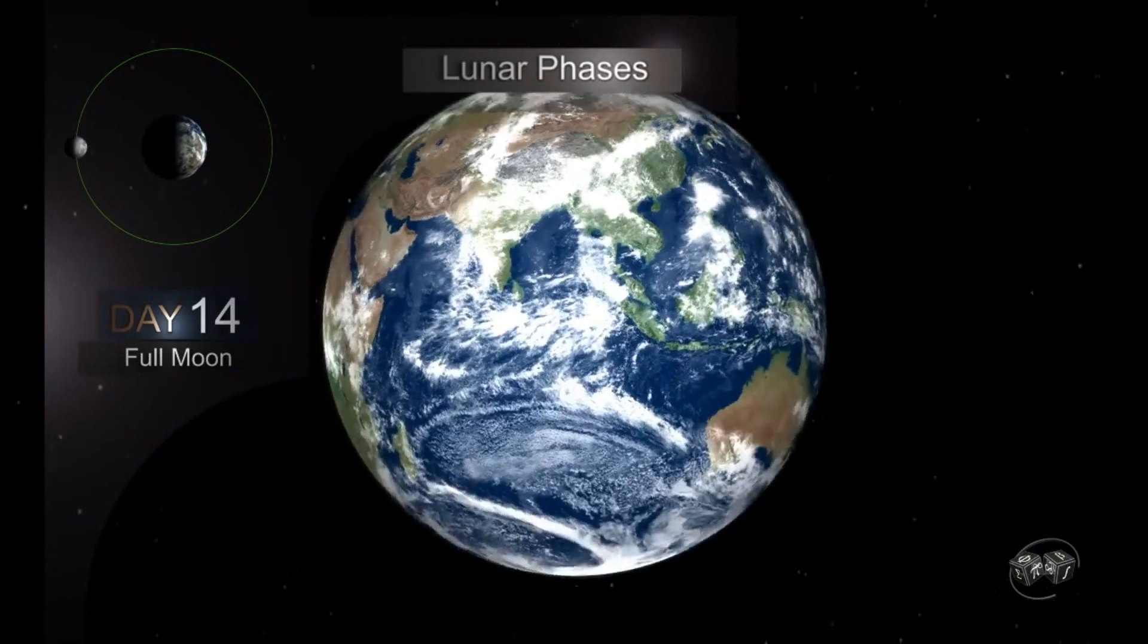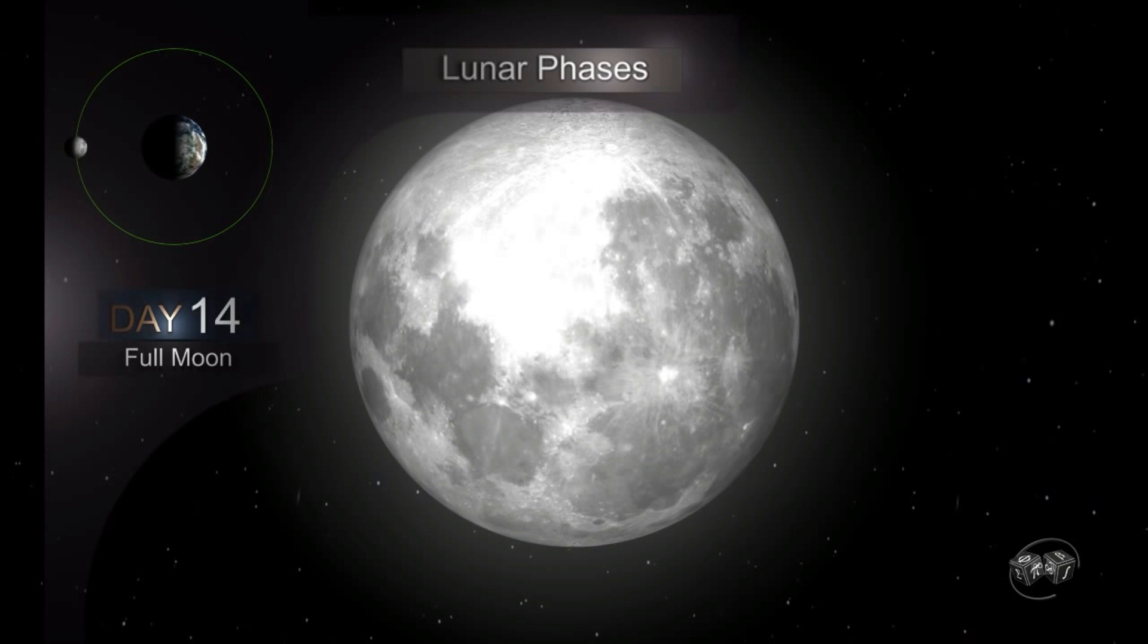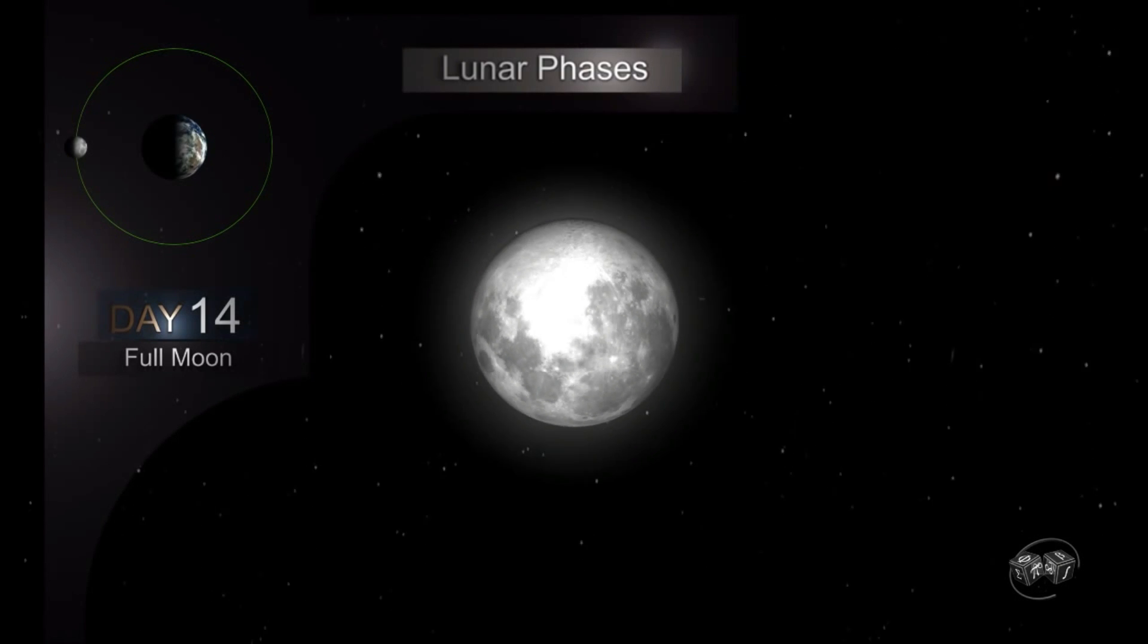From the South Pole we'll see a full Moon reversed from how we've seen from the North Pole. The Sea of Tranquility and all other seas are presented flipped 180 degrees.